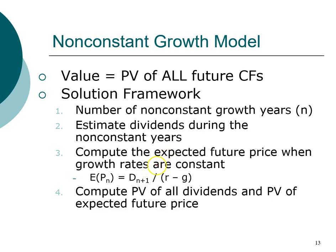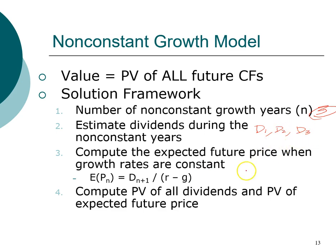Let's say we have solid information for a company over the next three years. That means we are going to estimate dividend in year one, dividend in year two, and dividend in year three. Beyond that — once we've used the information we have on hand — we will apply the future growth model. We'll forecast the price of the stock at the end of year three, and assume that starting in year four, dividends follow a constant growth rate.